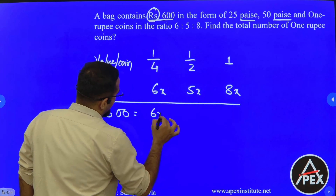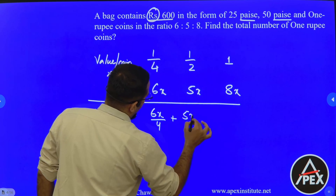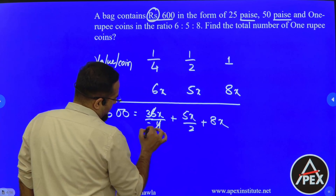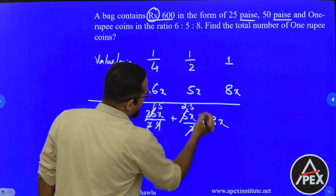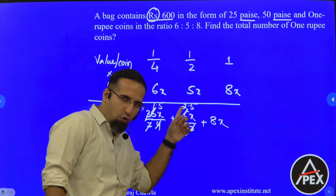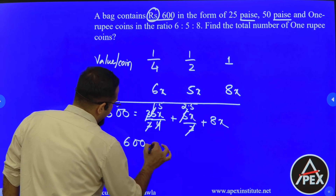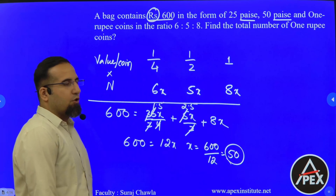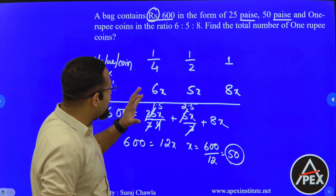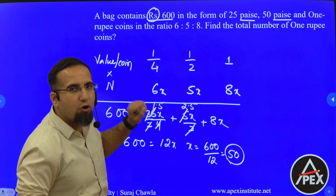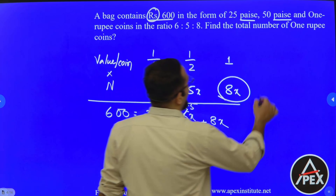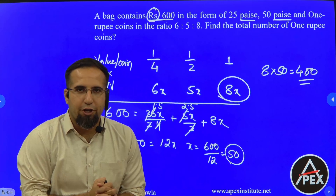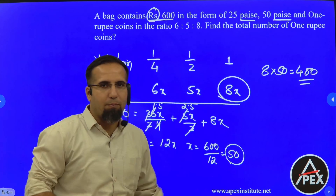So total amount: 600 = (1/4)×6x + (1/2)×5x + 1×8x = 1.5x + 2.5x + 8x = 12x. Therefore x = 600 ÷ 12 = 50. The question asks for the number of 1 rupee coins, which is 8x = 8 × 50 = 400. So this is how we calculate questions with respect to number of coins given to us.